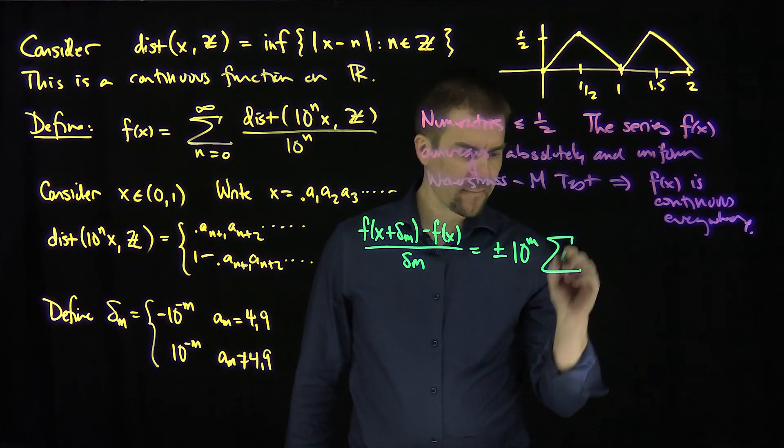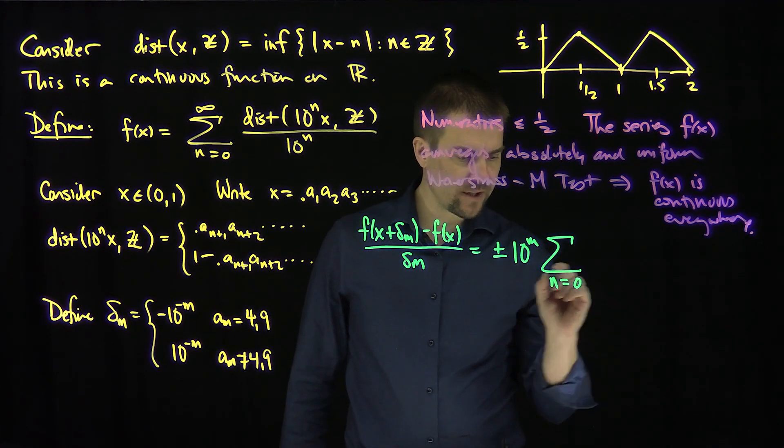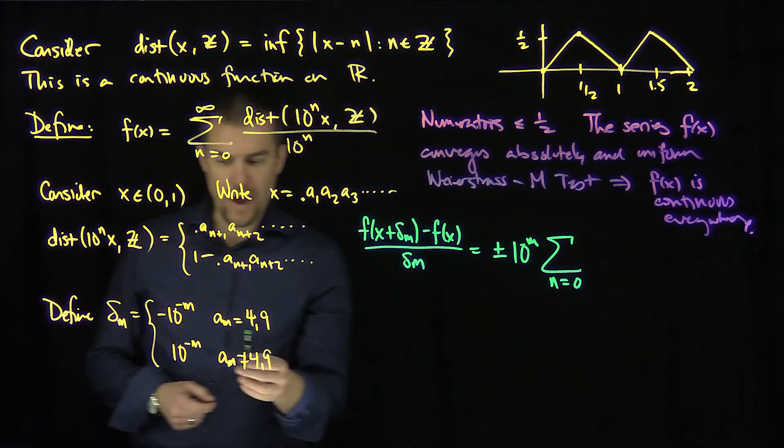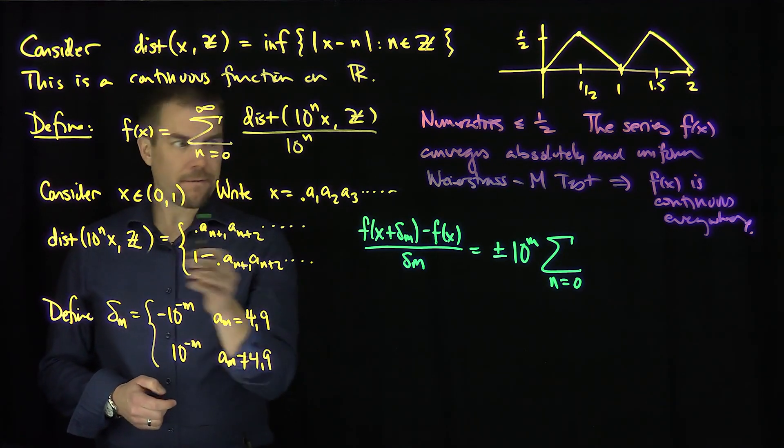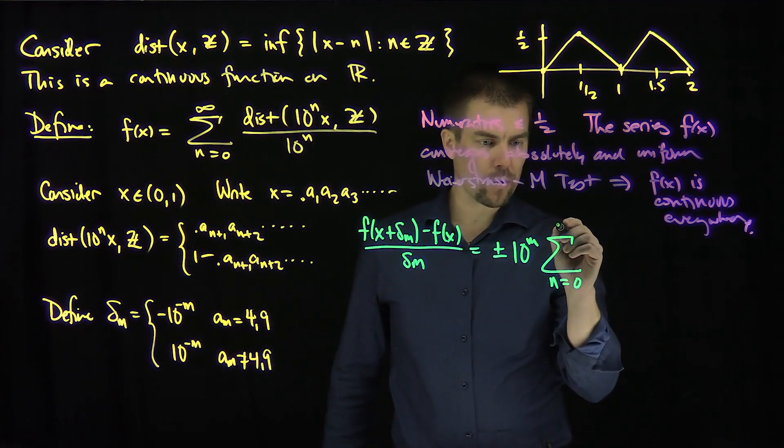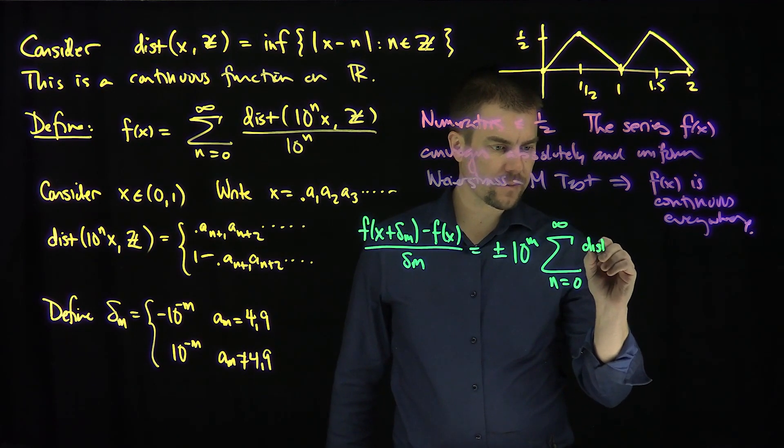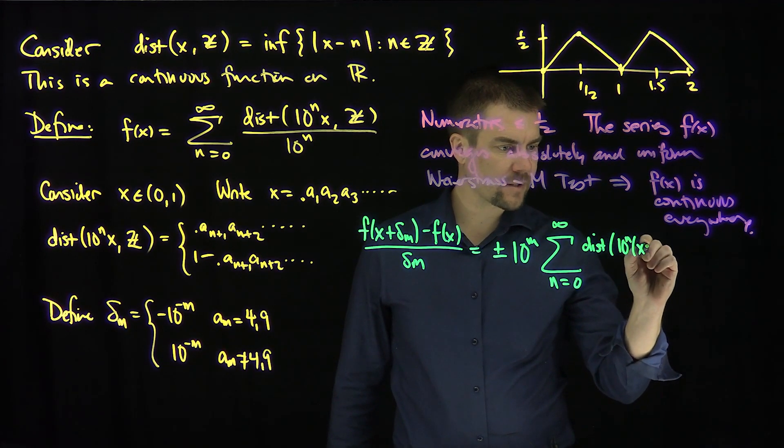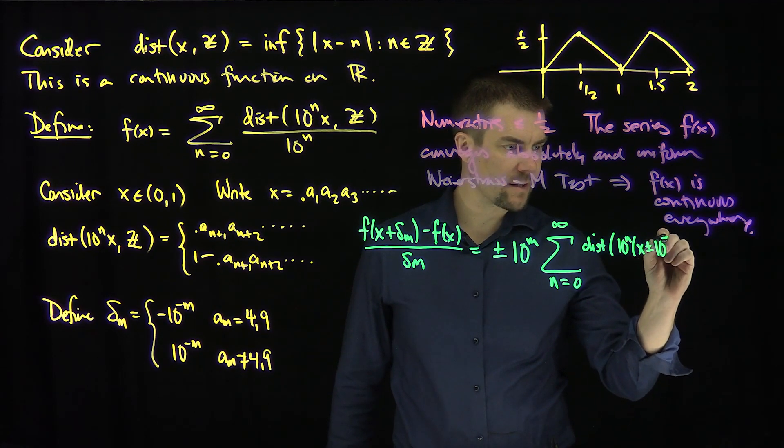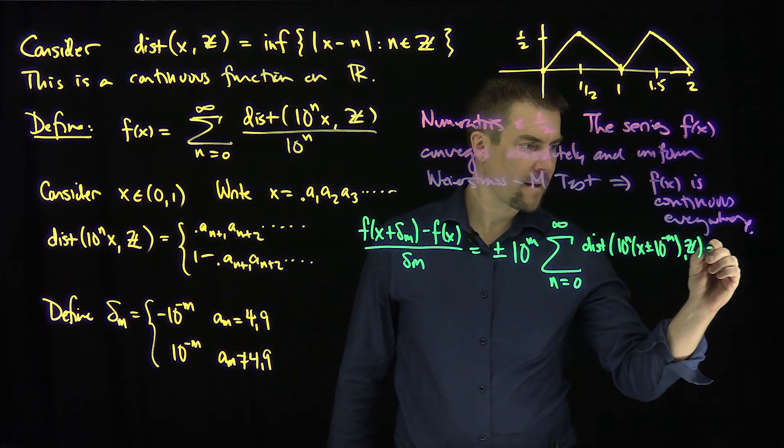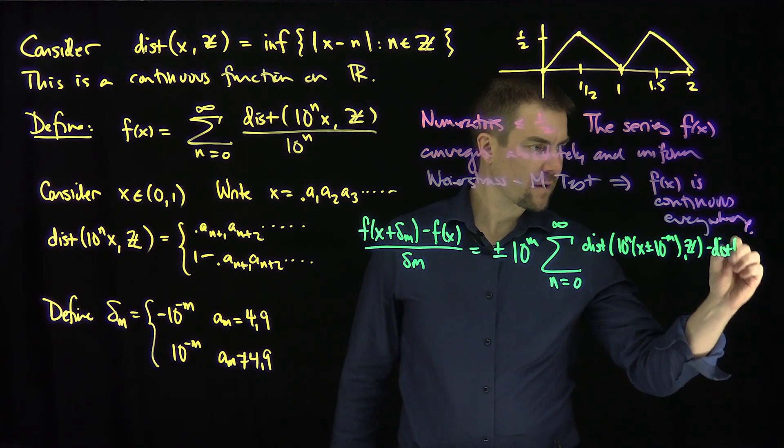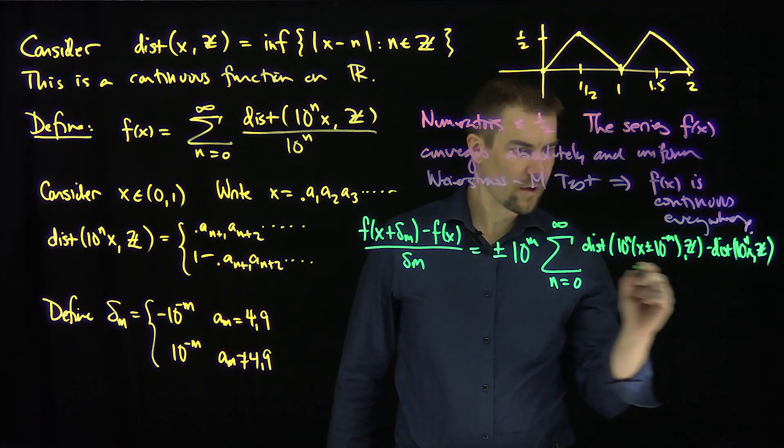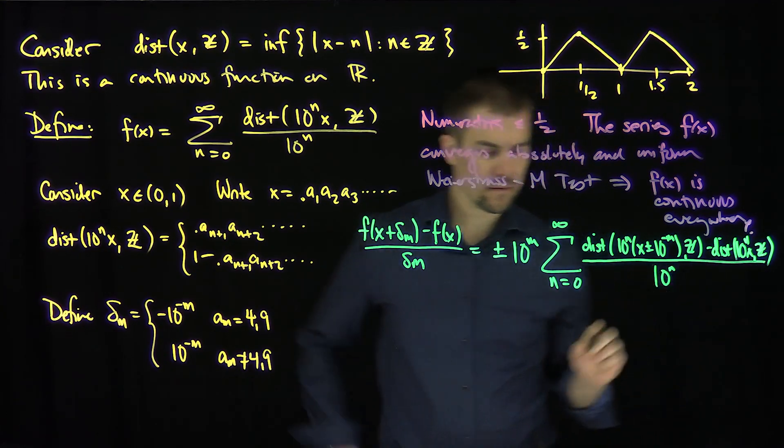And then the sum n goes from zero - we're going to stop and think for a second here. When I shift over x by delta_m, what's going to happen? Let's just write it out, actually. We'll go to infinity first and we're going to have the distance from 10^n x plus/minus 10^(-m) to Z, minus the distance from 10^n x to Z, all over 10^n.